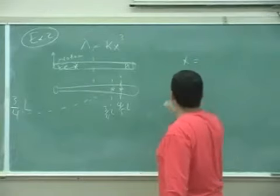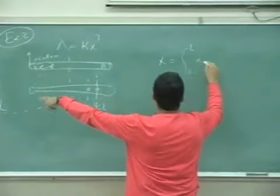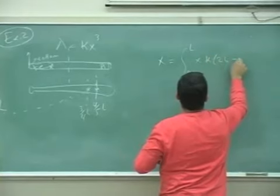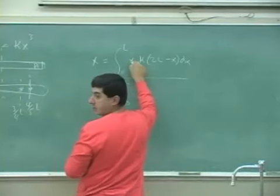So you're going to end up with integral zero to L x times lambda dx over integral zero to L without the x.